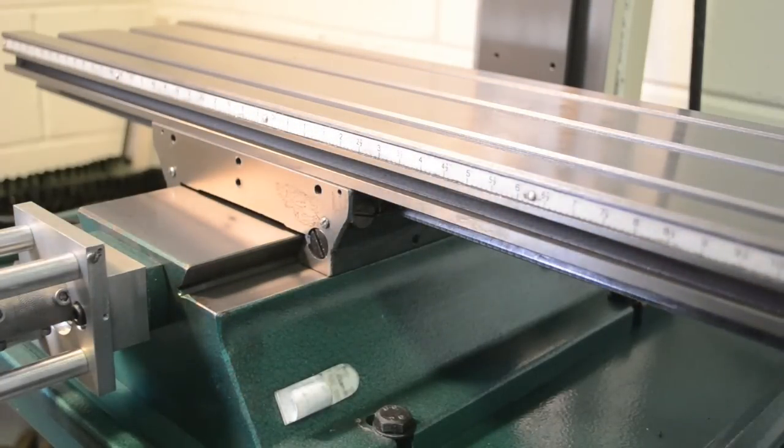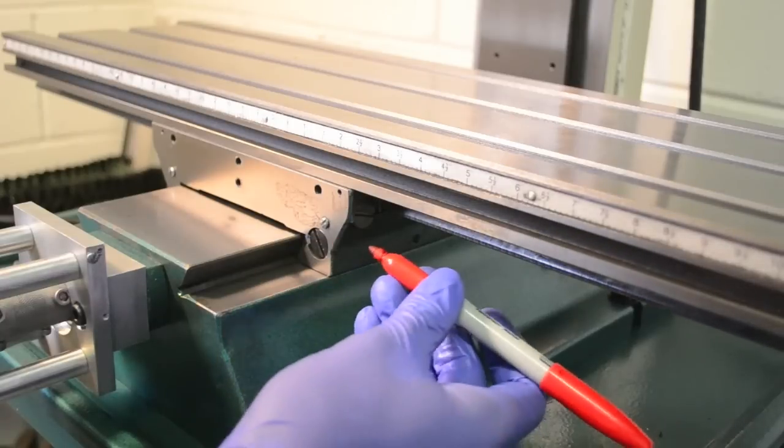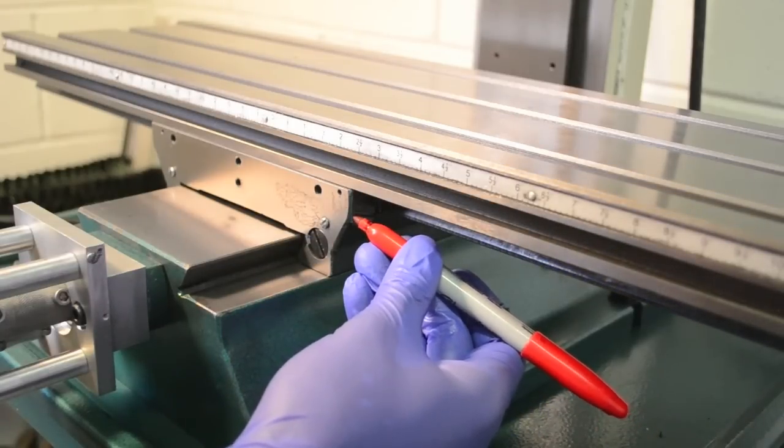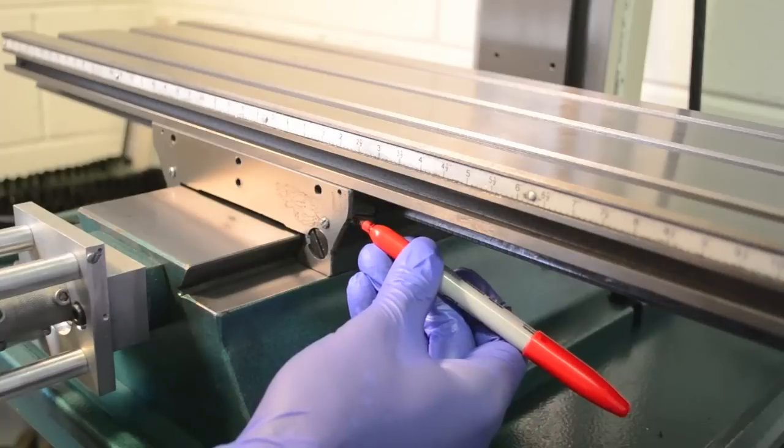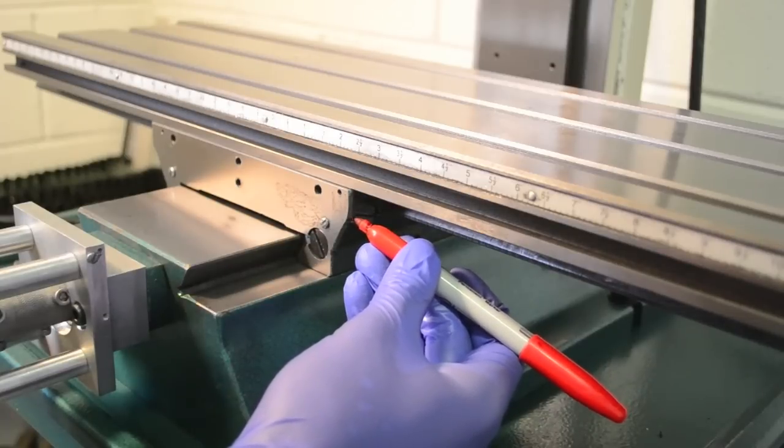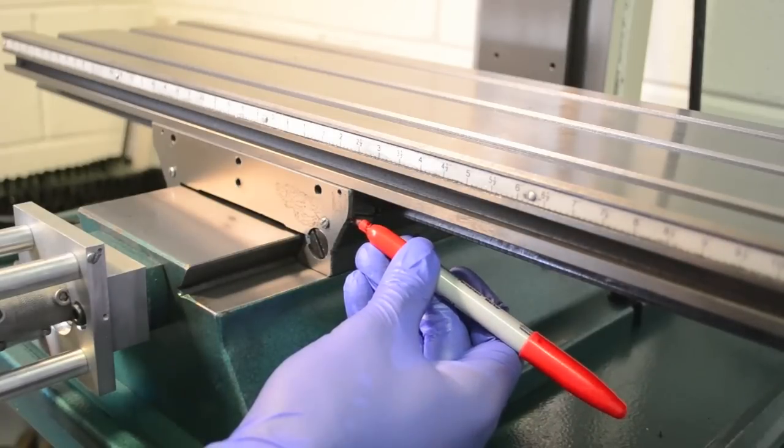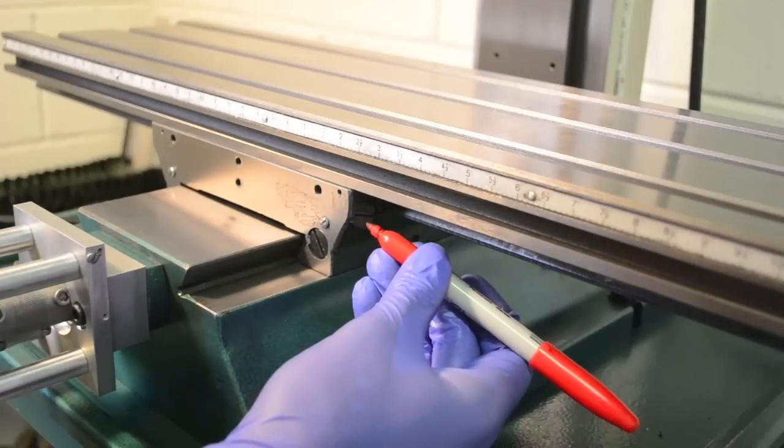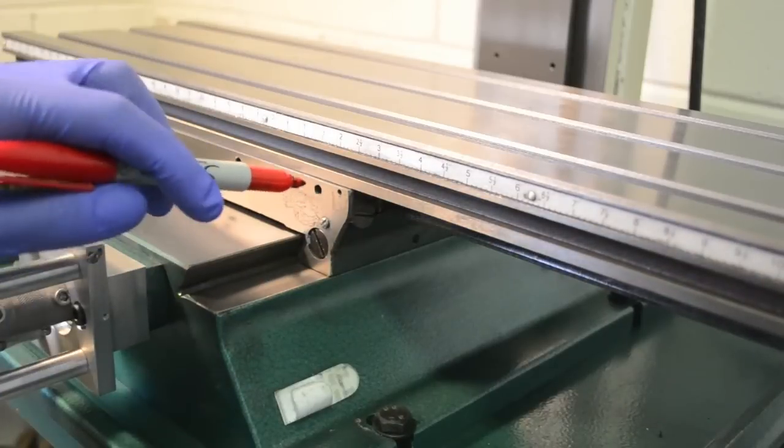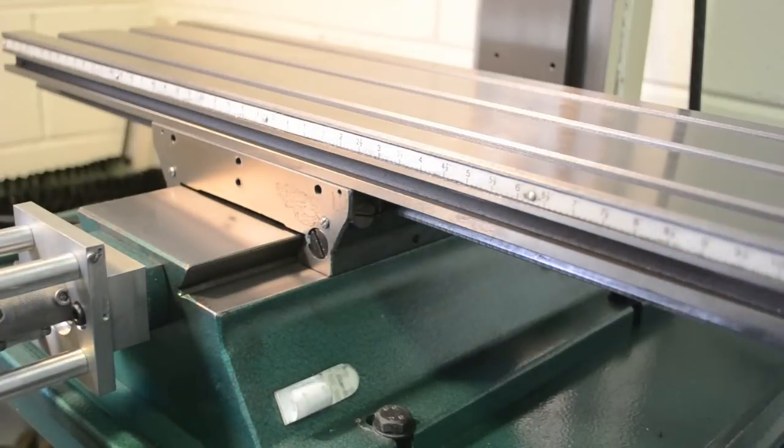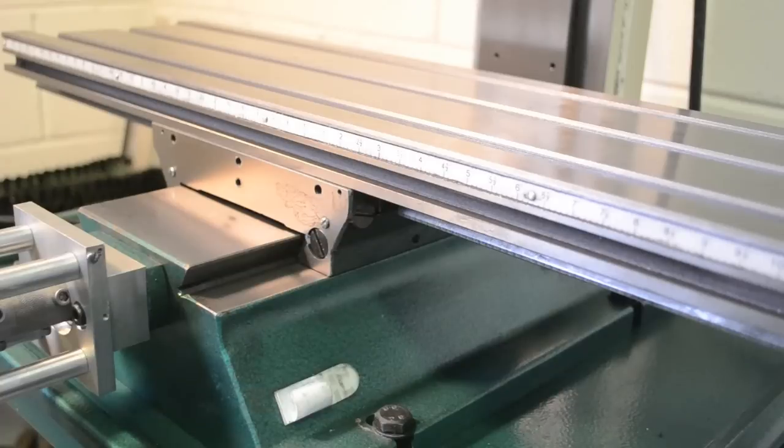What I'm going to do since I've already preset this is mark the set screw and mark on the actual machine where I have it set up. Then I'm going to unscrew this set screw and count my turns out so I can put it back in the same amount. Then I can take the gib out, take the table off, put everything back together. Hopefully that'll be easier.